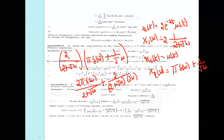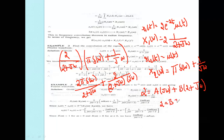Finding factors A and B for 2/[jω(2 + jω)]: we write 2 = A(2 + jω) + B(jω). Comparing coefficients: the constant term gives A = 1, and the jω coefficient gives 0 = A + B, so B = −A = −1. Therefore the partial fraction expansion is A/(jω) + B/(2 + jω) = 1/(jω) − 1/(2 + jω).